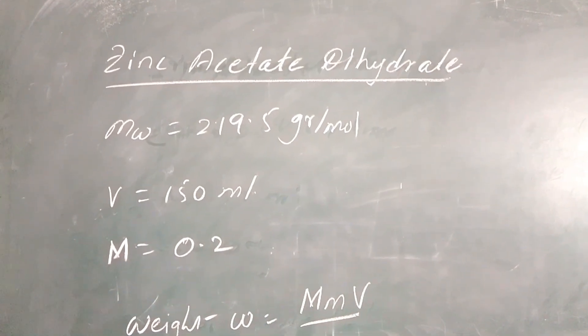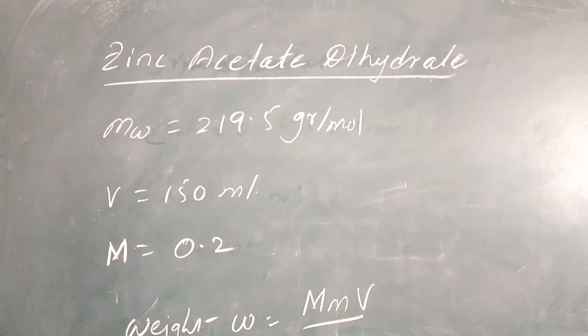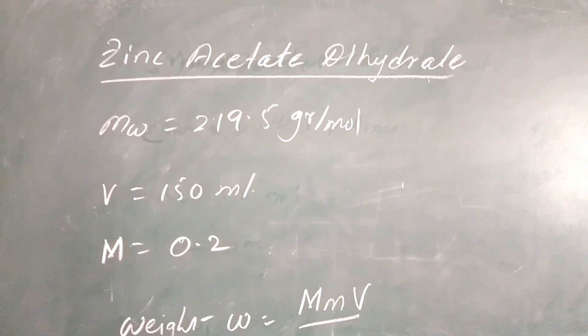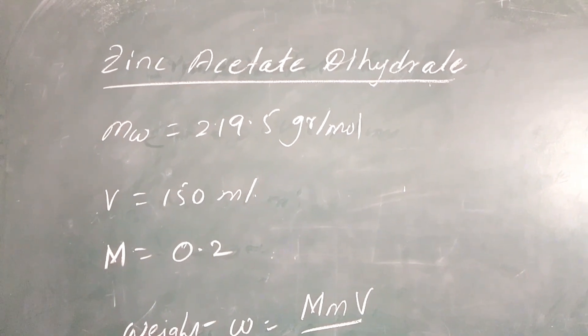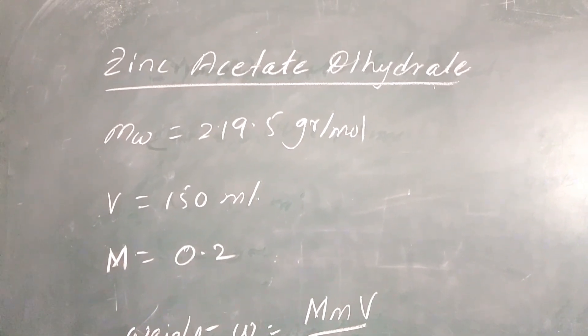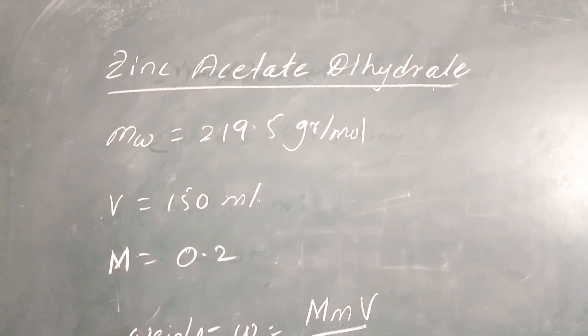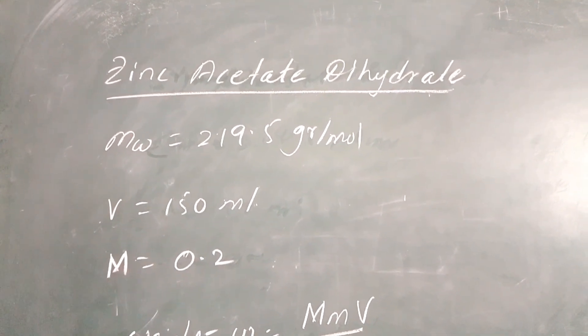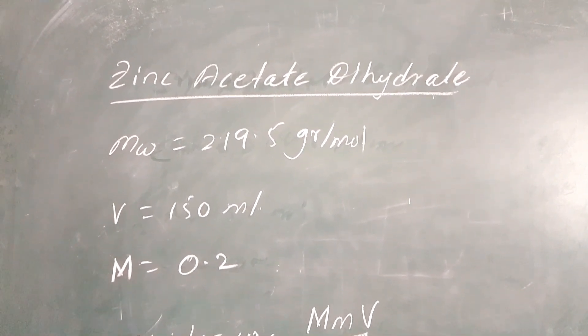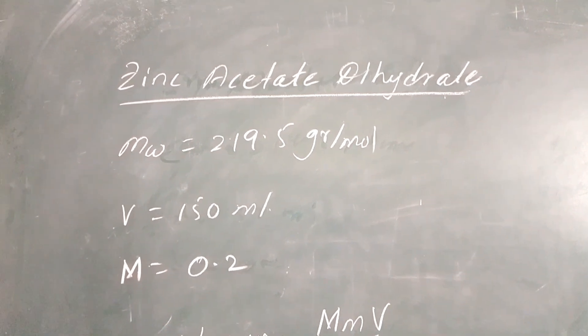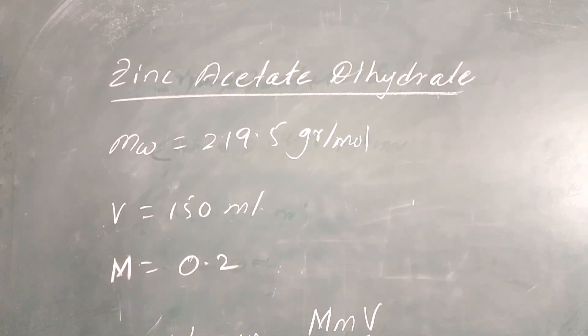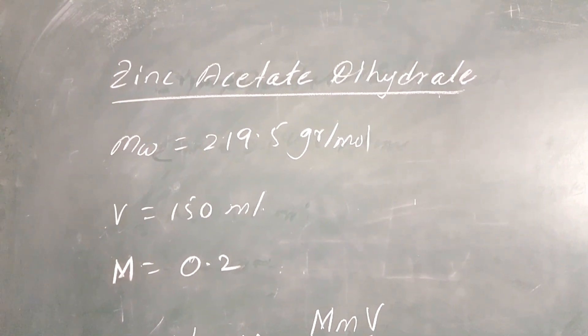Before going to preparation of zinc oxide nanoparticles using sol-gel technique, we have to calculate the amount of salt that we have to take. In this experiment I am going to make use of zinc acetate dihydrate as a starting material. The corresponding molecular weight of this compound is 219.5 grams per mole.